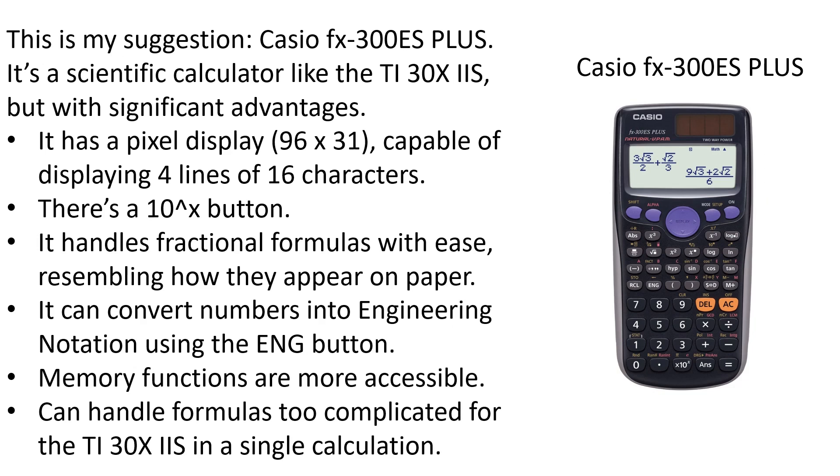This is my suggestion: the Casio FX300ES Plus. It's a scientific calculator like the Texas Instruments, but with significant advantages. First, it has a display 96x31 capable of displaying four lines of 16 characters. Second, there's a 10 to the X button located at the bottom of the calculator. Third, it handles fractional formulas with ease, resembling how they appear on paper.